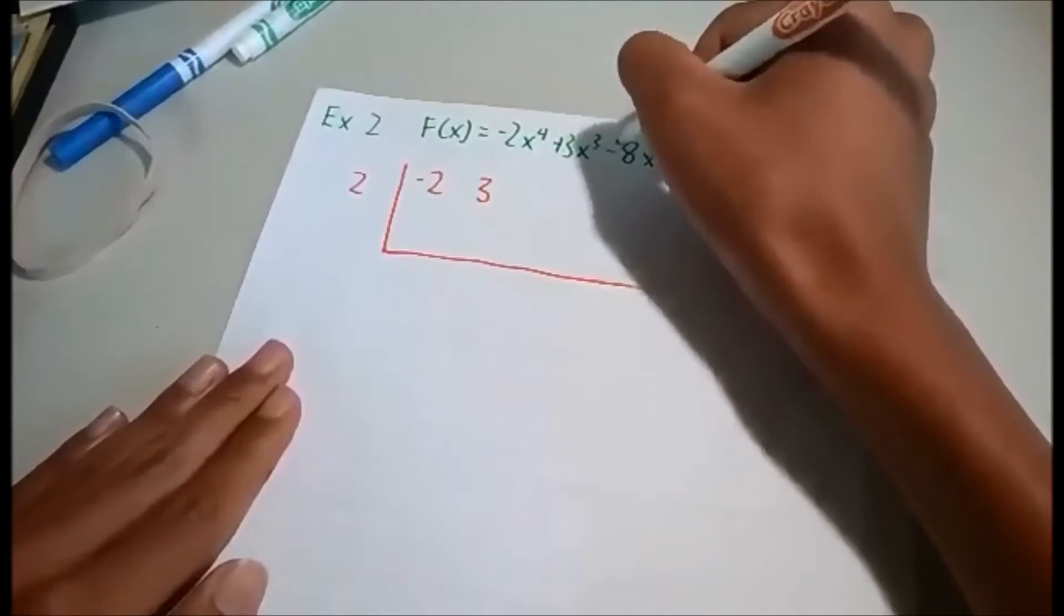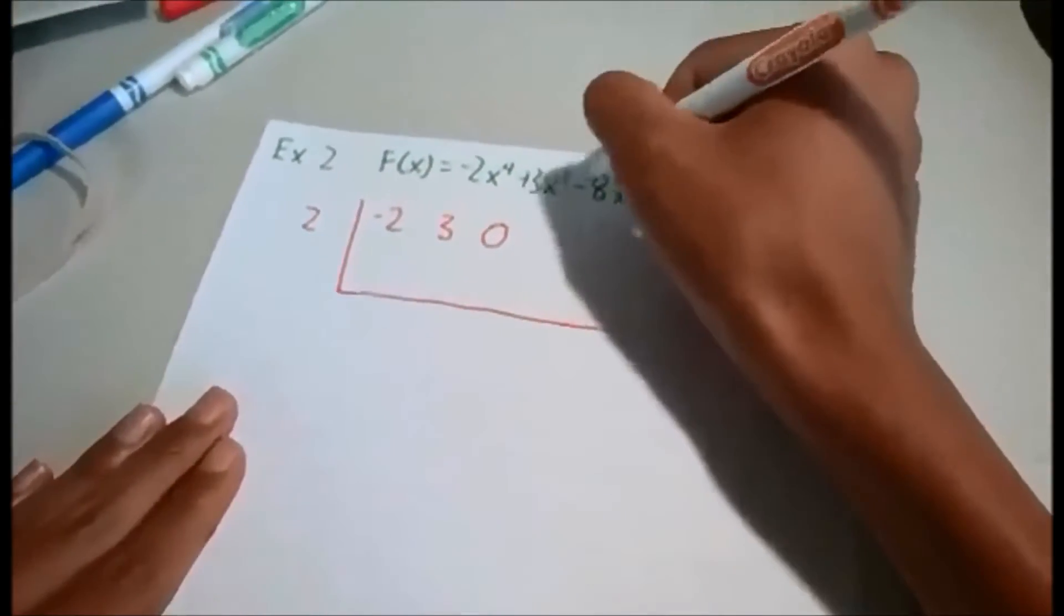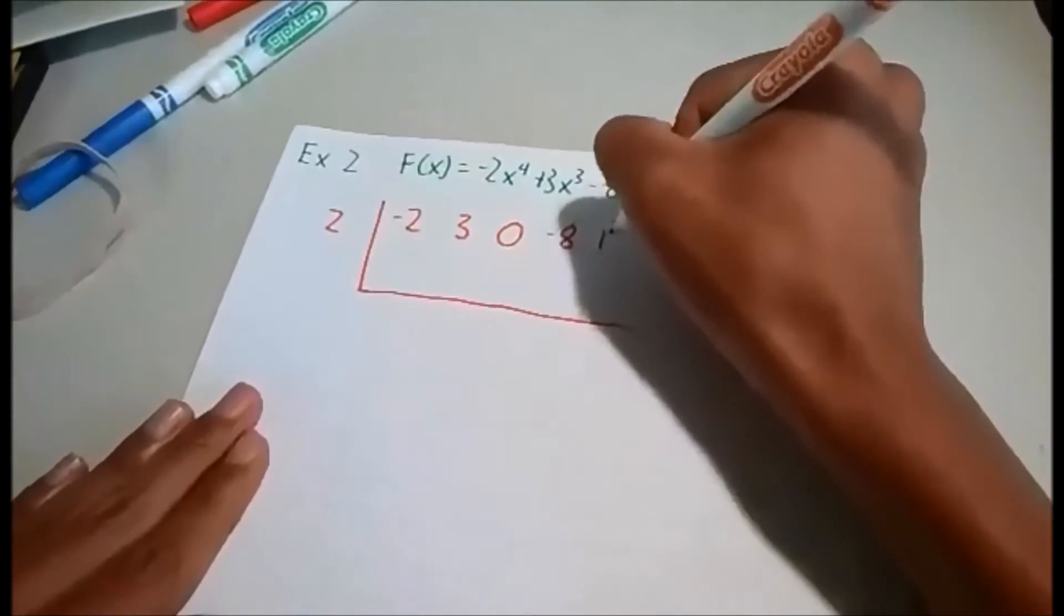Now we don't have an x to the power of 2. So to replace that, we will be adding a 0. And negative 8 will follow and we will end off with 13.